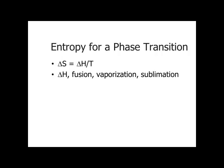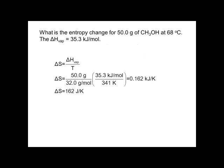Entropy for a phase transition. The entropy change for a phase transition equals the change in enthalpy divided by the temperature of the transition. Delta H can be the heat of fusion, vaporization, or sublimation. Here's an example.